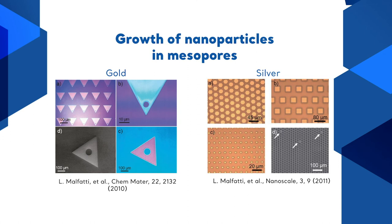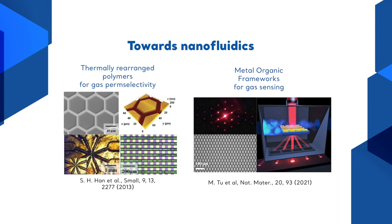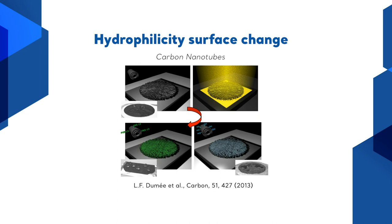We can also grow nanoparticles inside the mesopores to be used for catalysis or SERS. We can also irradiate thermally rearranged polymers that present micropores, or metal-organic frameworks for gas storage or gas sensing. We can also change the hydrophilicity of surfaces.